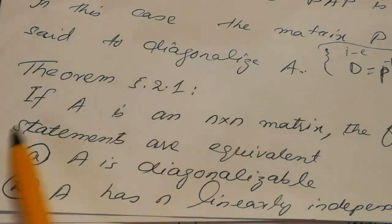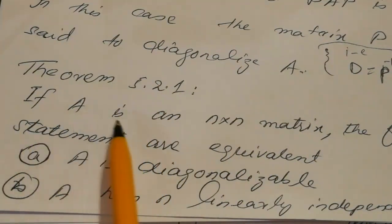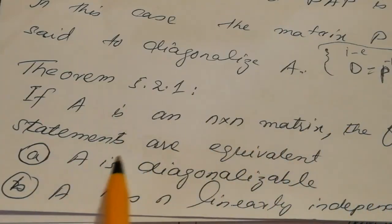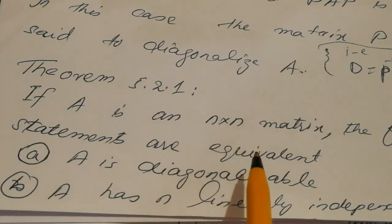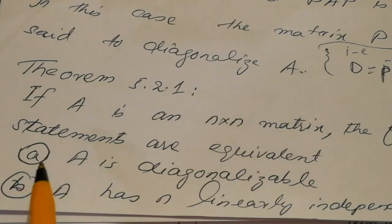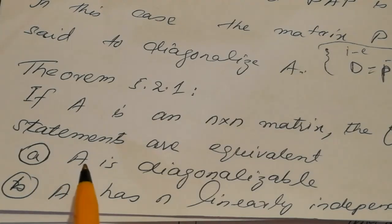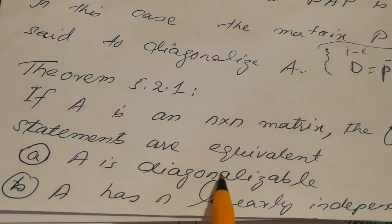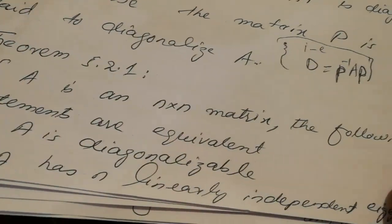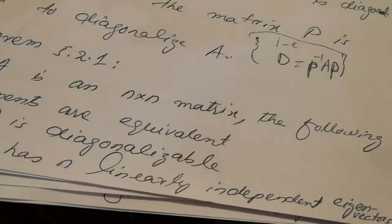Theorem 1: If A is an N×N matrix, the following statements are equivalent. First, A is diagonalizable. Second, A has N linearly independent eigenvectors.